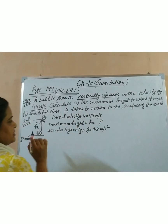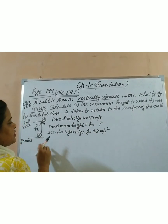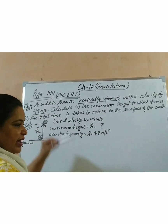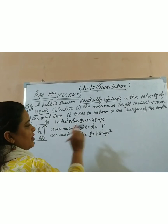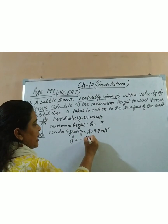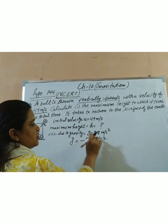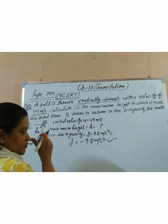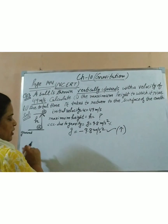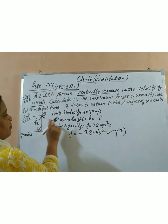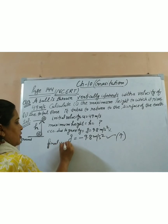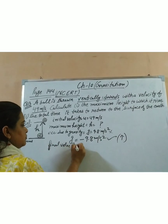The initial velocity with which the ball is thrown is 49 meters per second. We have to calculate the maximum height. Acceleration due to gravity — free fall bodies have acceleration due to gravity, and since we are throwing the ball upward, we will put minus 9.8 meters per second squared. At the highest point, the final velocity will be 0.